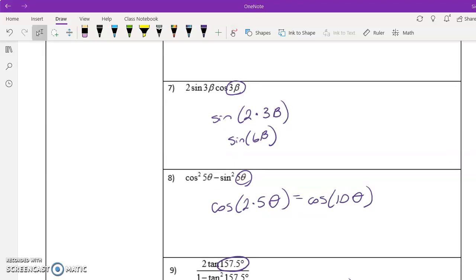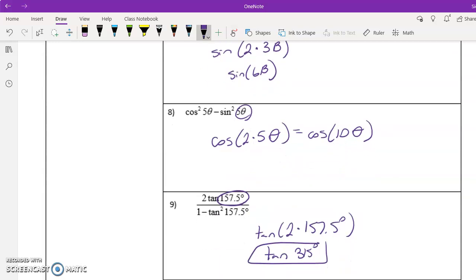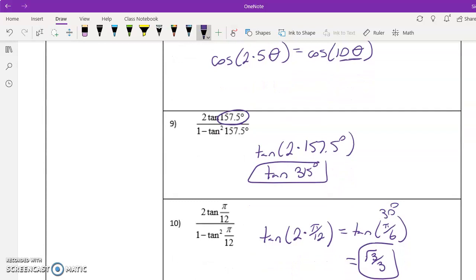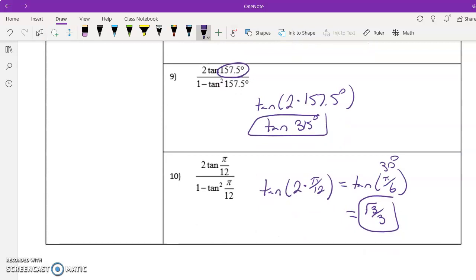So let's look at the last four. Again, the big thing is just identifying is it sine, cosine, or tangent and what we're replacing alpha for. That's it on that one. This one, we replaced alpha with 5 theta, so that's 10 theta. It kind of looks like 100. This one, our alpha was 157.5 and it was tangent. And then this one, be careful, it just kind of looks weird. But still, you're just multiplying 2 times the angle, which is pi over 6. And then I noticed that pi over 6 was 30 degrees, so I kind of went a little bit further.